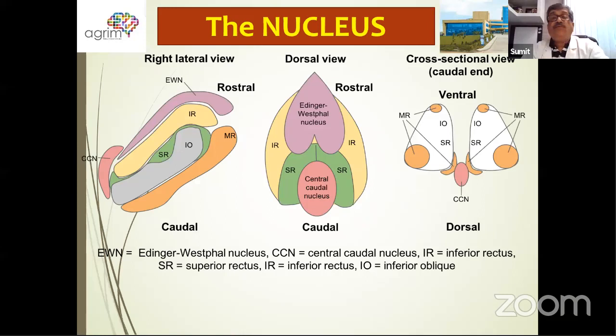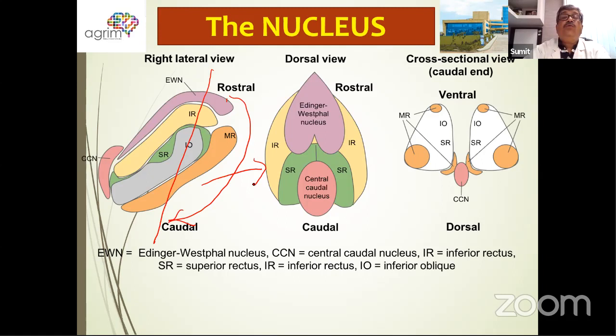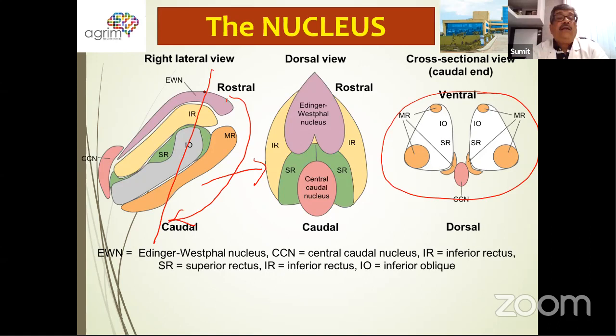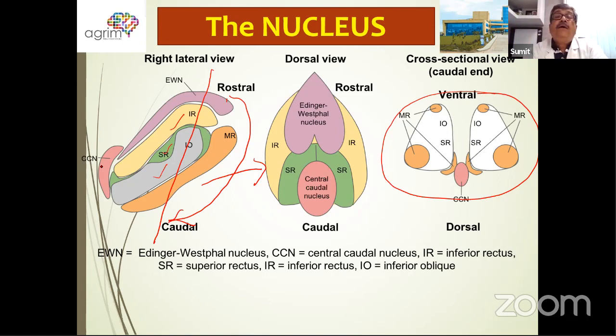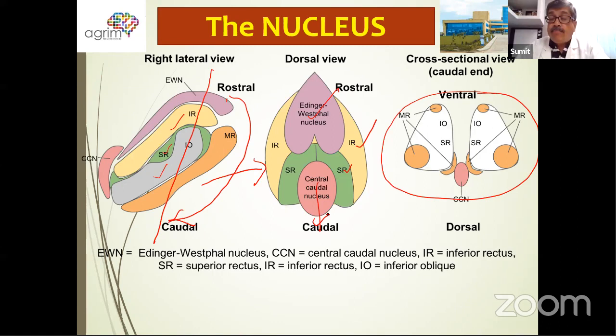In a rostro-caudal direction, the nuclei are disposed so that the rostral-most is the Edinger-Westphal nucleus and the caudal-most is the nucleus for the medial rectus. In between are the inferior rectus, superior rectus, inferior oblique, and the central caudal nucleus. It is important to understand that some of these nuclei are paired — like the inferior rectus and superior rectus nuclei — whereas the Edinger-Westphal nucleus and the central caudal nucleus are unpaired.